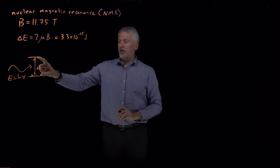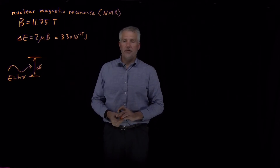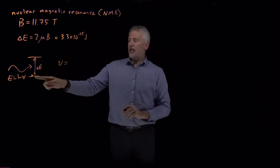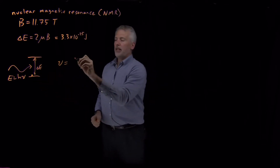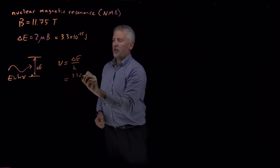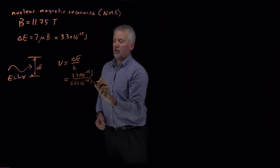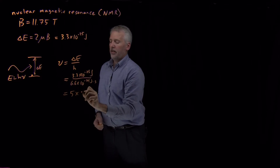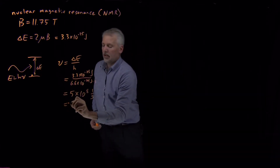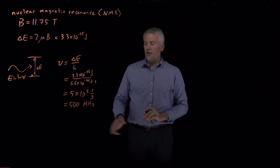If we shine electromagnetic radiation — a photon with energy exactly equal to delta E — on this system, that nucleus can absorb that photon and jump up to the higher state, just as we've seen for electronic degrees of freedom. So the frequency of the photon we'd use to promote protons from the spin-up to the spin-down state is that energy divided by Planck's constant, which turns out to be 5 times 10 to the 8th per second.